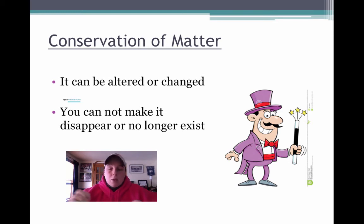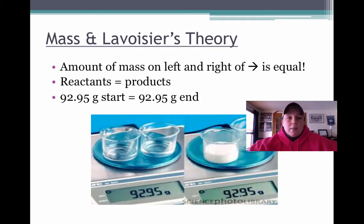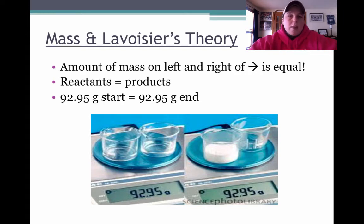I like to call that 'poofing' — you cannot make it go poof. You have to account for it somewhere. Quick reminder: mass is the amount of matter in any object, and we use our triple beam balance, or TBB, where the SI unit is kilogram. So here it is put into theory: the amount of mass on the left of the arrow — which we say 'yield' — and the right of the arrow is equal.